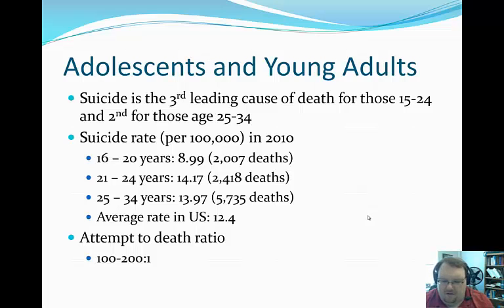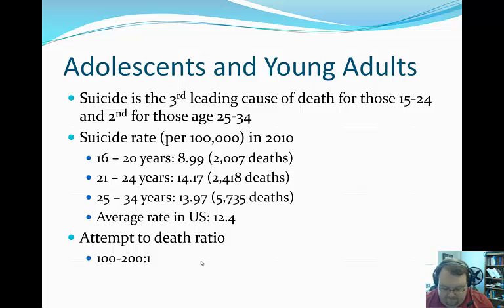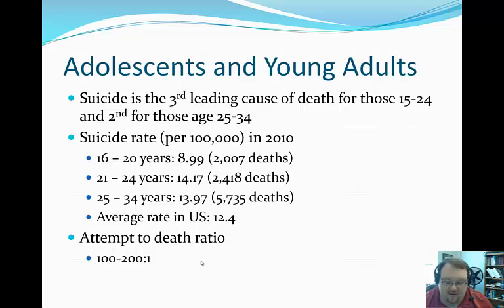Bouncing back to adolescence, one of the reasons there's so much focus on suicidal behavior — despite the rate being a little lower than the national average — is because of the attempts. You see a lot of suicide attempts in this age group. For adolescents, the attempt-to-death ratio is about 100 to 200 to 1, meaning for every one death by suicide, between 100 and 200 individuals will attempt suicide. This is part of the reason why we have to focus on suicide among adolescents and college students.